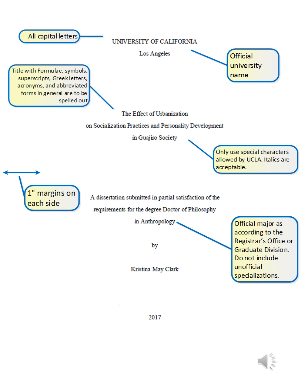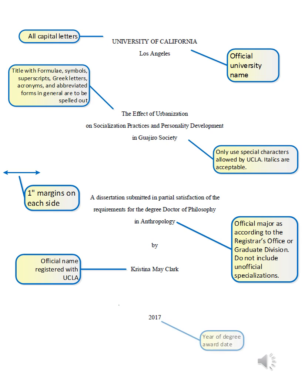Your name appears underneath the submission notice and as with your degree, this must match your record. For any changes, you must speak with the registrar's office prior to submitting your ETD. Notice the "by" above your name is lowercase. Do not capitalize the B in by. Finally, your title page will include the year you are submitting your manuscript. If submitting in the 2016-17 academic year but in June of 2017, your year will be 2017, not 2016. And do not put a page number on your title page.